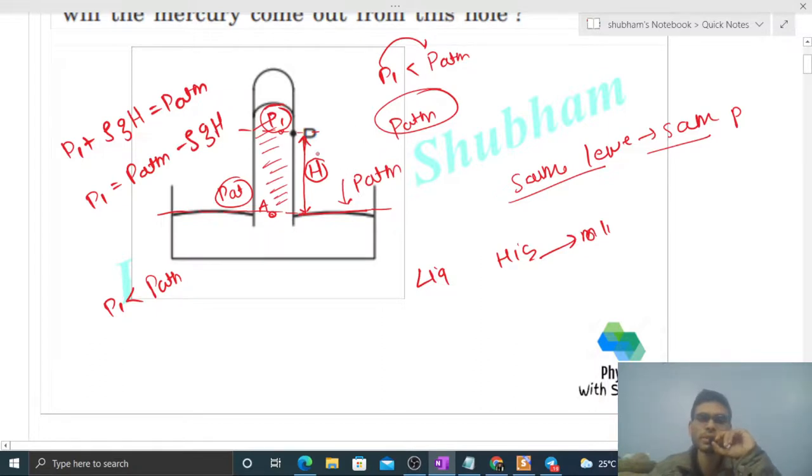You can feel it this way: if there is a molecule here or some mercury, the force acting on it from outside will be atmospheric pressure times the area of this molecule, and from inside it will be P1 times A. So the net force is inward and that will be greater.